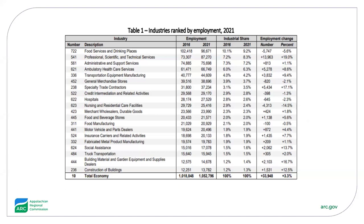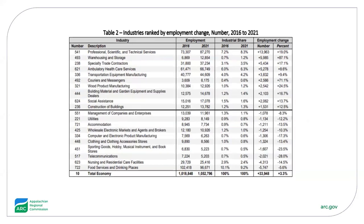Change variables, both absolute and percent-based, are shown in the rightmost column. Another example is Table 2, which shows the 10 industries that saw the largest absolute increases from 2016 to 2021, along with the 10 industries that saw the largest declines. Several other tables are included in the reports, along with brief descriptions of each.